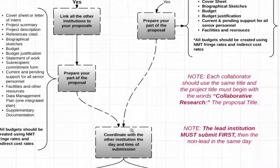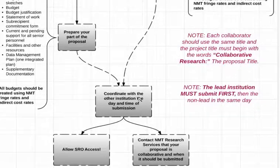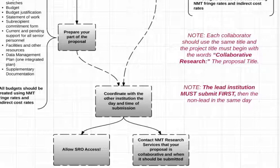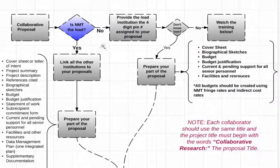Throughout all of this, you need to keep the Office of Research informed. Send an email with the title of your proposal, indicate that it's a collaborative proposal, state whether we are the lead or not, and let us know your planned submission timeline. You also need to give the SRO access so we can view and submit your proposal — without that access, we are not able to view your proposal or know it needs to be submitted.